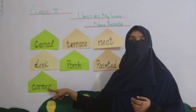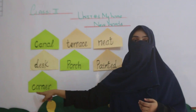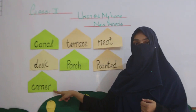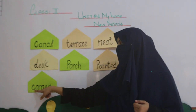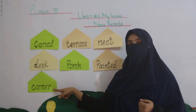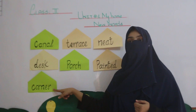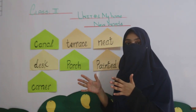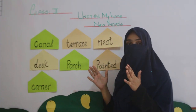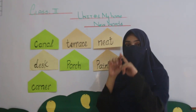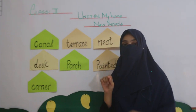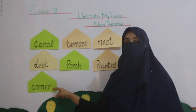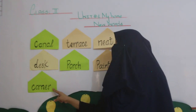The third word is Corner. C-O-R-N-E-R, Corner. Kisi bhi kamre ka, kisi bhi copy ka, side wala portion — ham usse kehtein Corner.